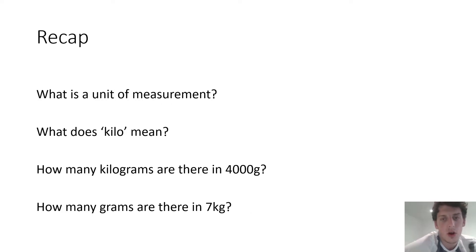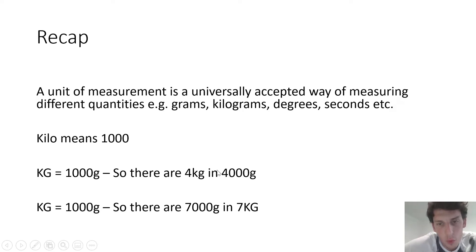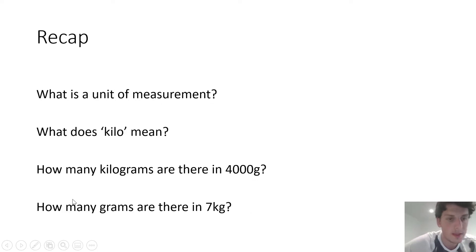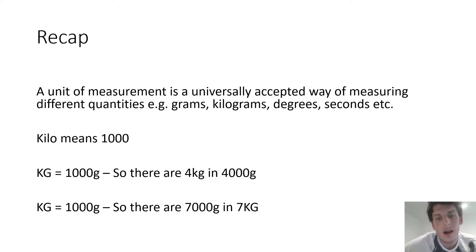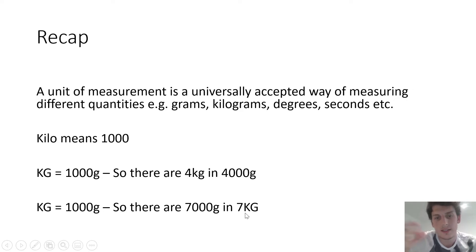Then the next question was, how many kilograms are there in 4,000 grams? Remember, a kilogram equals 1,000, so we need to know how many thousands there are in 4,000 grams, and there are four. So there are four kilograms in 4,000 grams. And then the last question was the opposite — how many grams are there in 7 kilograms? We know that a kilogram is 1,000, so we've got seven lots of 1,000. Seven times 1,000 is 7,000, so we've got 7,000 grams.